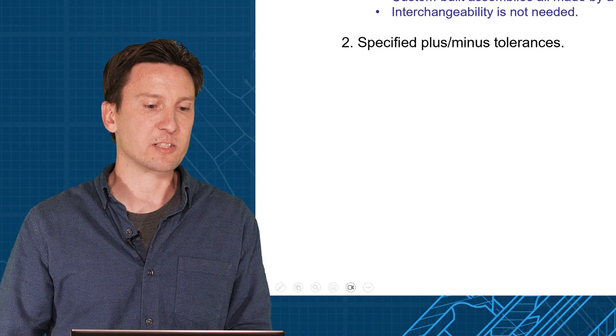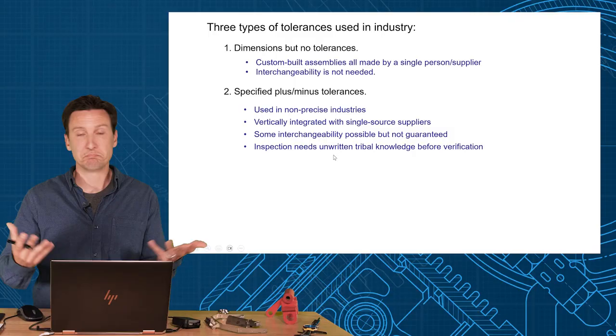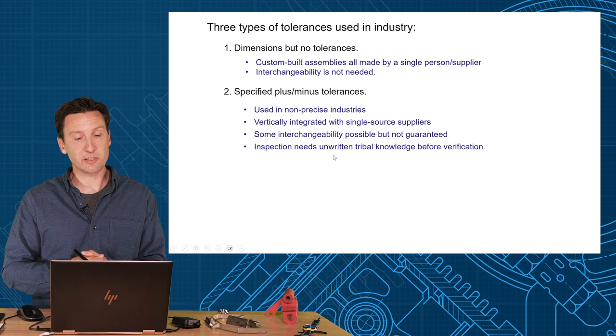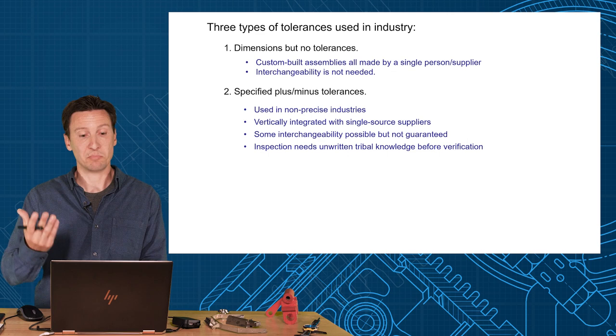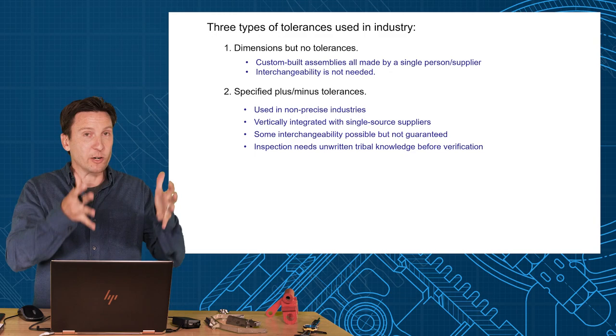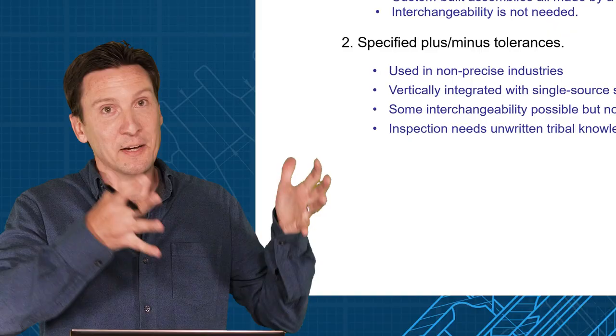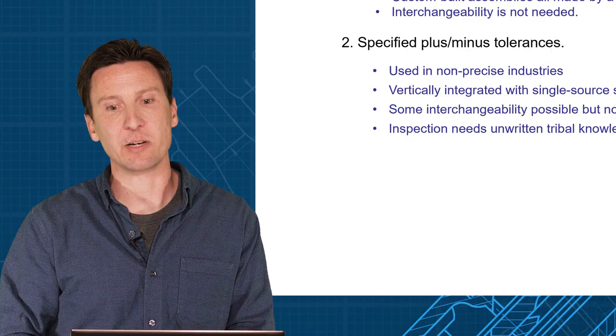A lot of companies are in this specified tolerance method. They're going to use plus or minus if you're a non-precise industry. I have a friend that works in the nuclear industry doing nuclear piping for power plants. He said the tolerances are so large, plus or minus 30,000 and everything, we don't really care. So we just use the plus or minus system. And that probably works real well. Also, it works if you're vertically integrated. If everybody knows this part and you have a single source supplier, then maybe we can get away with plus and minus tolerancing. Because everybody knows the part, there's that tribal knowledge that's ingrained in the way we've been making this for years, and we understand what those plus and minus tolerancings mean.